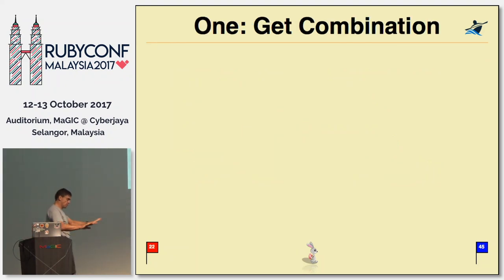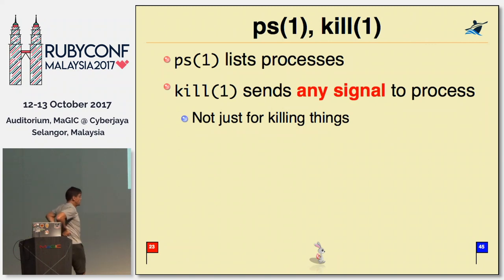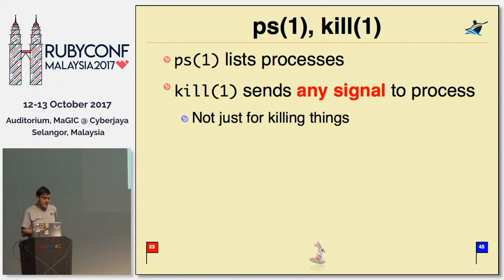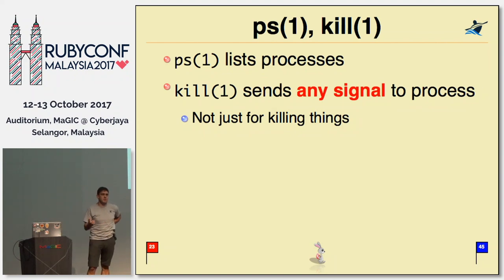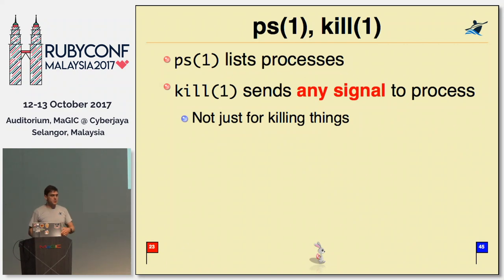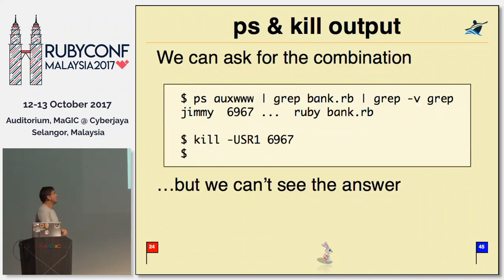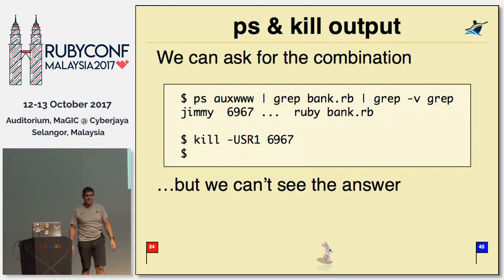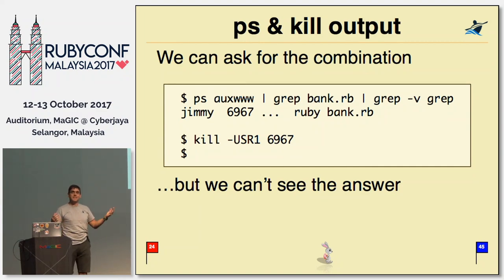Step one: let's get the combination. We're going to use ps and kill. PS tells us where the bank process is, and kill helps us get the combination. Kill is a funny name — you can give any signal name to kill and it will just send that signal to the process; it's up to the process what it wants to do. So we send a SIGUSR1 to the bank. We do a little ps, use some pipes, find out the PID is 6967, and send kill -USR1 to it. And nothing happens — because we don't own the terminal where this process is running. So it got printed somewhere, but we can't see the answer.